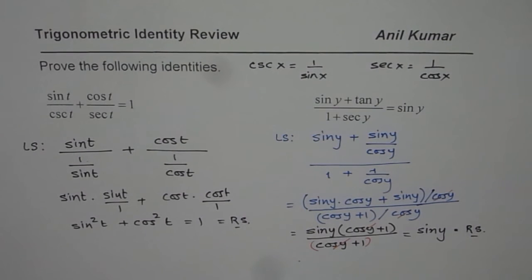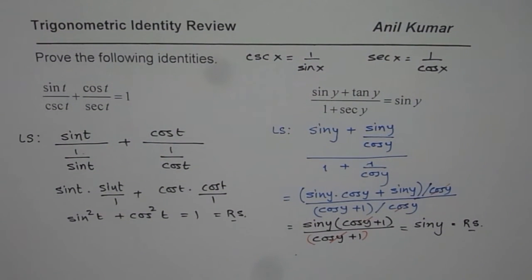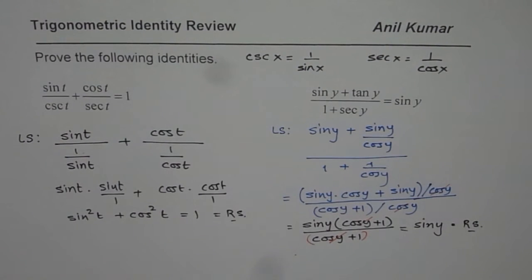So that is how I can prove both these identities. Go through this example, understand your reciprocal or secondary ratios, and then prove these identities. I hope that helps. Thank you.